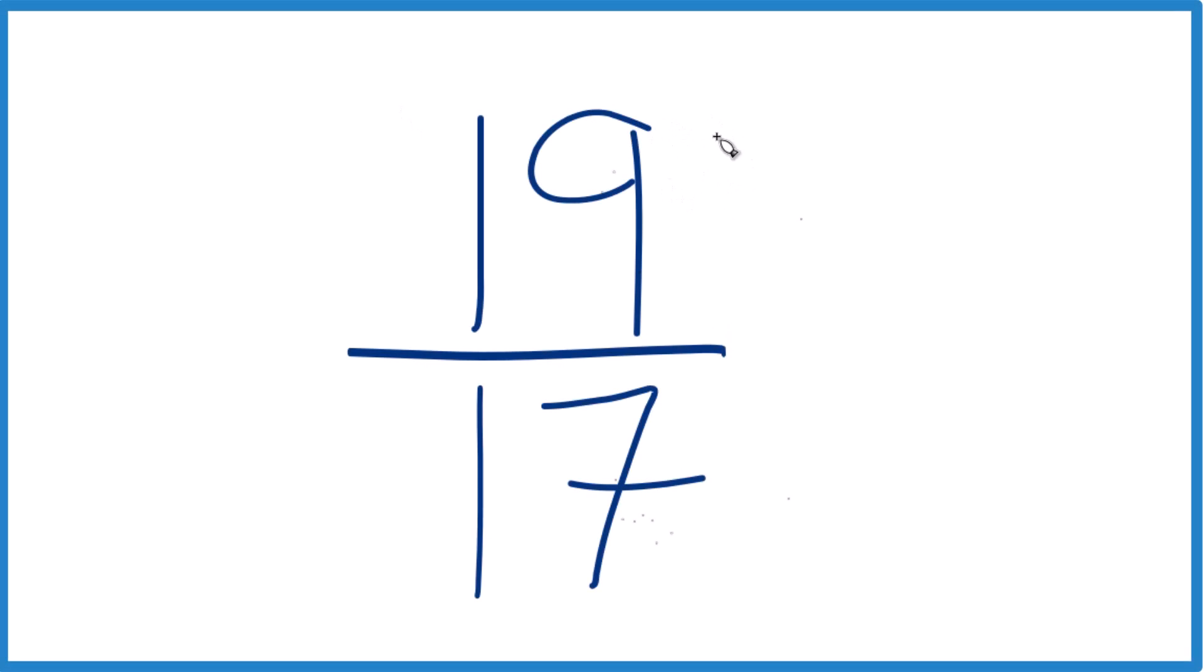Here's how we can simplify the fraction 19/17, and we'll also write it as a mixed number. So we're looking for a common factor, that's a whole number that goes evenly into 19 and 17.